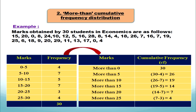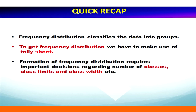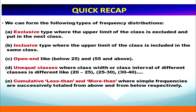We have now learned about less than and more than cumulative frequency distribution. Let us have a quick recap. We learned about frequency distribution which classifies data into groups, and how to convert between series — from inclusive to exclusive and from exclusive to cumulative frequency distribution. We also learned about class, class limits, class widths, and discussed all five types in detail: exclusive series, inclusive series, open end, unequal classes, and cumulative less than and more than.